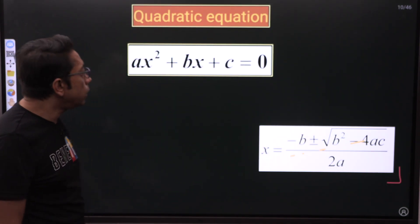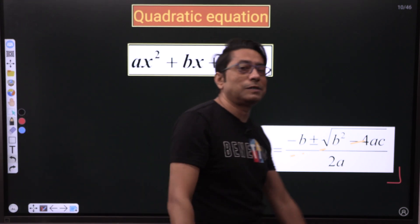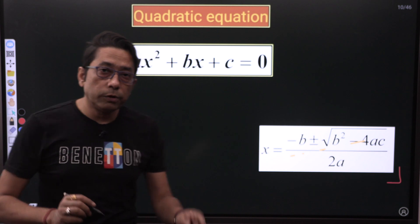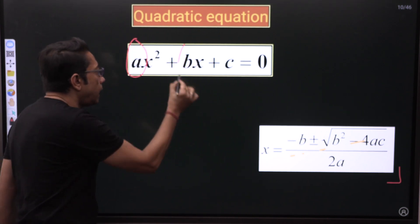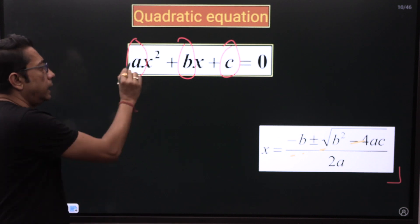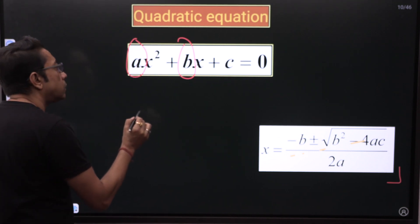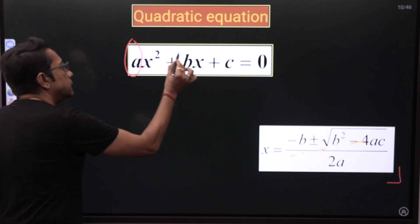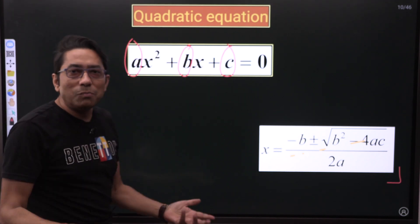Quadratic equation. In the quadratic equation, we have learned AX squared plus BX plus C. A is the coefficient of X squared, B is the coefficient of X, and C is the constant number.